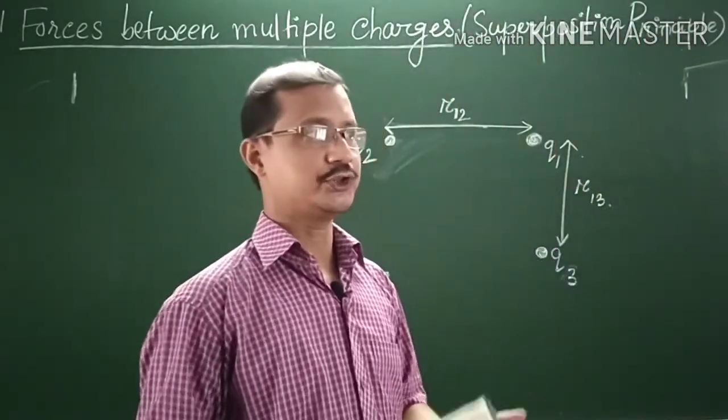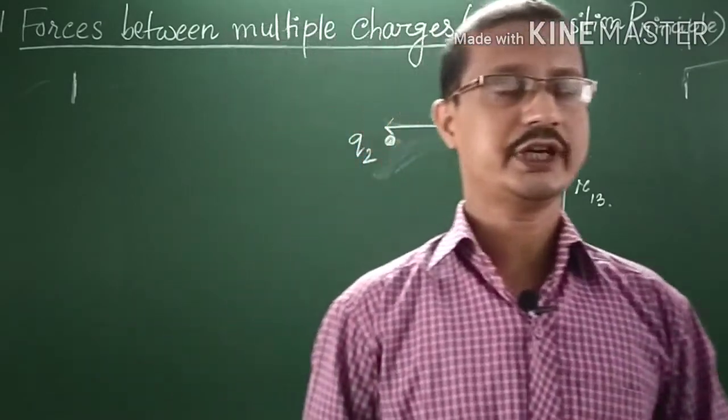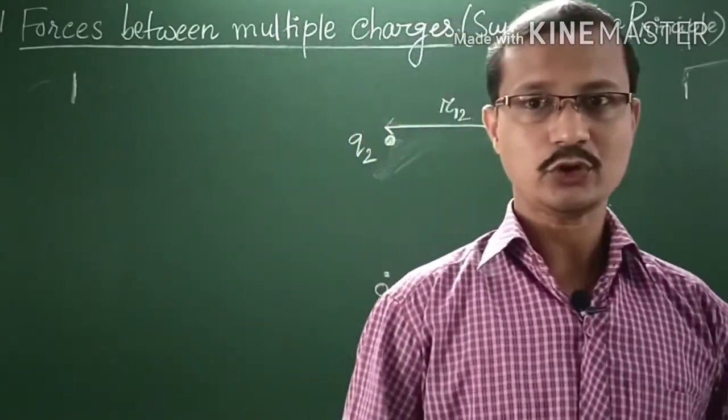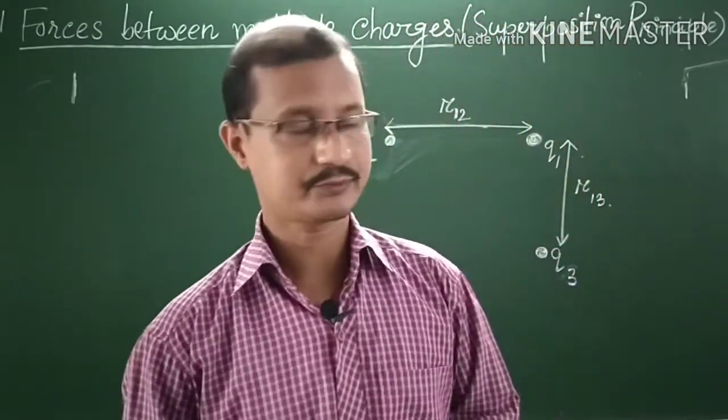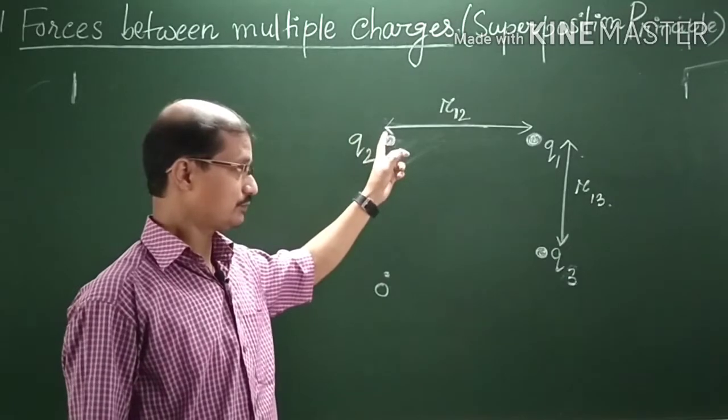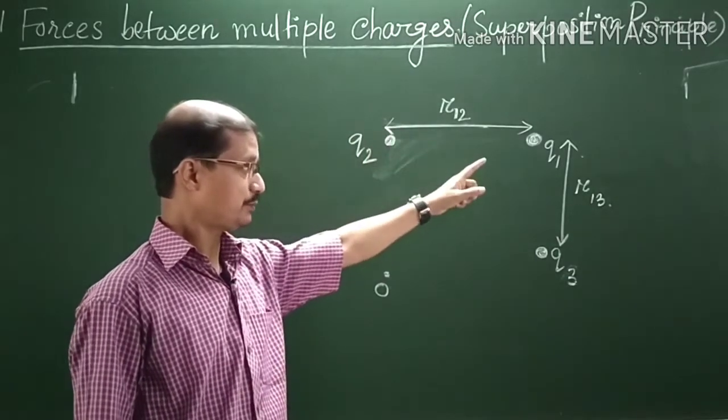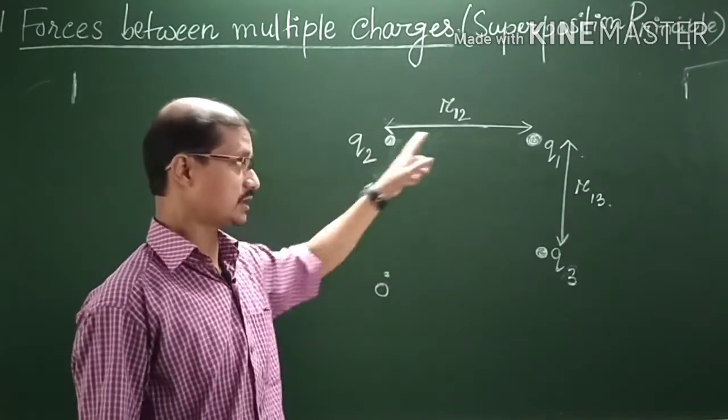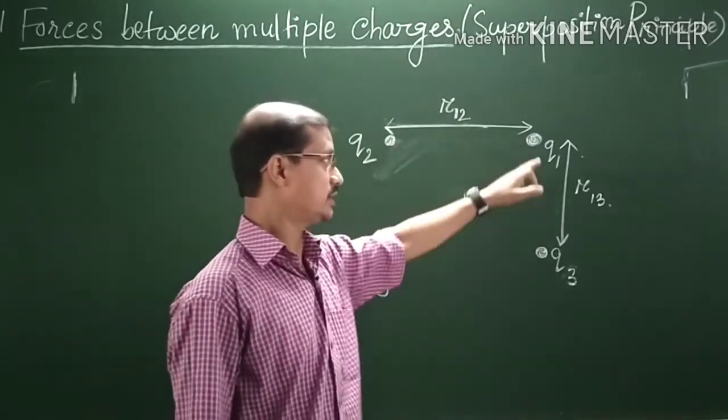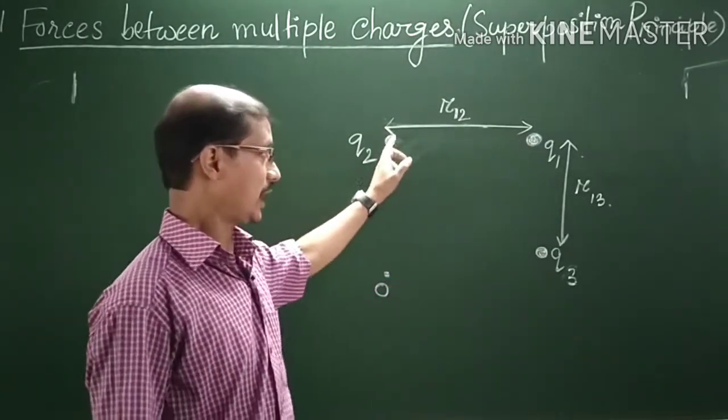Using superposition principle, we can determine electric force on a charge. Here you see in this figure we have three point charges: Q1, Q2, and Q3. These are three like point charges.